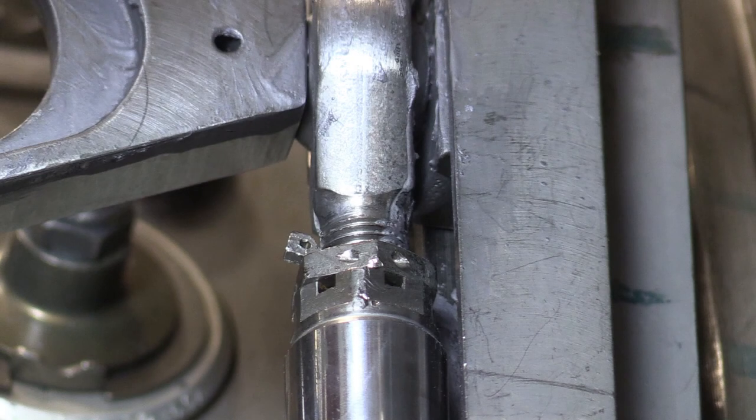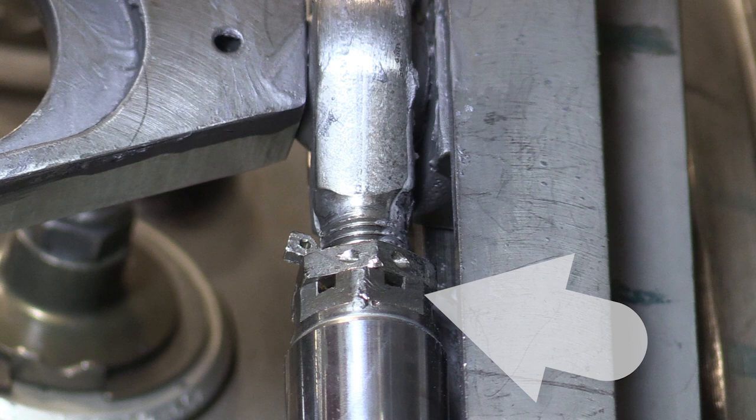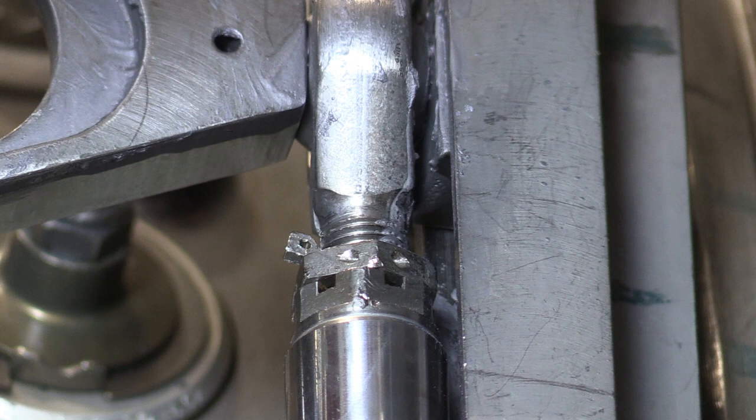Okay, I've gone ahead and tightened and torqued the lock nut. The key is in the correct position, so what I'm going to do now is go ahead and lock wire the lock nut to the lock key.